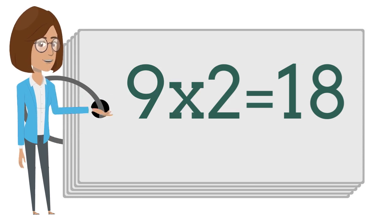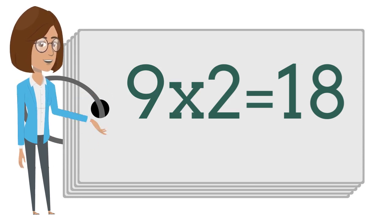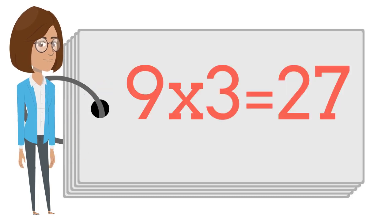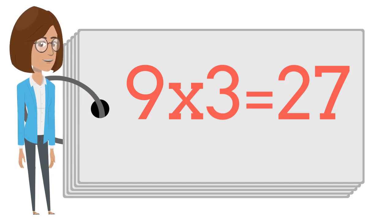Nine times two is eighteen. Nine times three is twenty-seven.